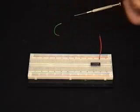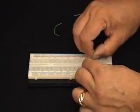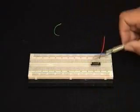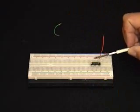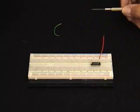We can also insert discrete components from point to point like this. Normally these components should be cut down so that they sit close to the breadboard.